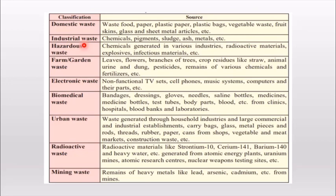Industrial waste includes large amounts of chemicals, metals, and sometimes various harmful chemicals that are released. Then we have hazardous waste — these are harmful chemicals from industries like nuclear power plants or from radioactive metals. For example, mercury or antimony are very, very harmful to the environment, and if these substances get mixed into the soil, they even affect humans.